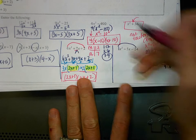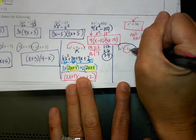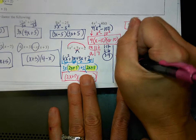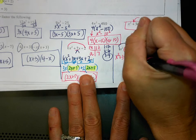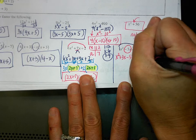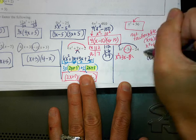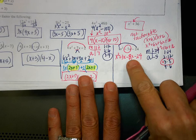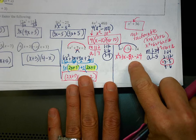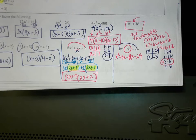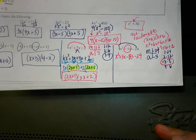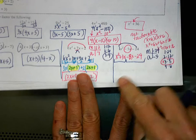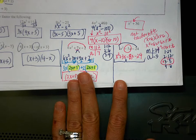Do these two multiply to be negative 24? Do they add to be negative 5? Yes. So now we're rewriting this problem, but we're changing our negative 5x into these two terms. I write this as x squared plus 3x minus 8x minus 24. These two can be flipped around. Now we're going to group them into our two groups. What is the GCF of my first group? X.